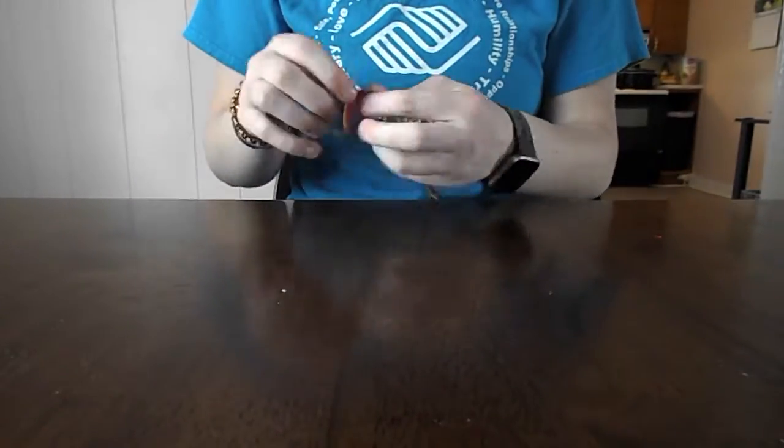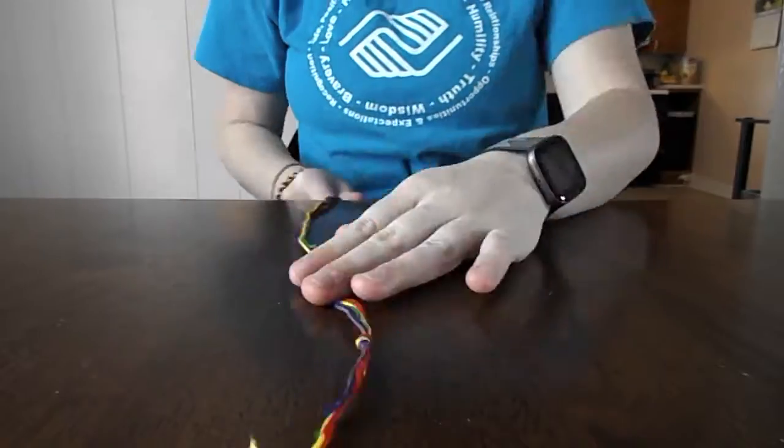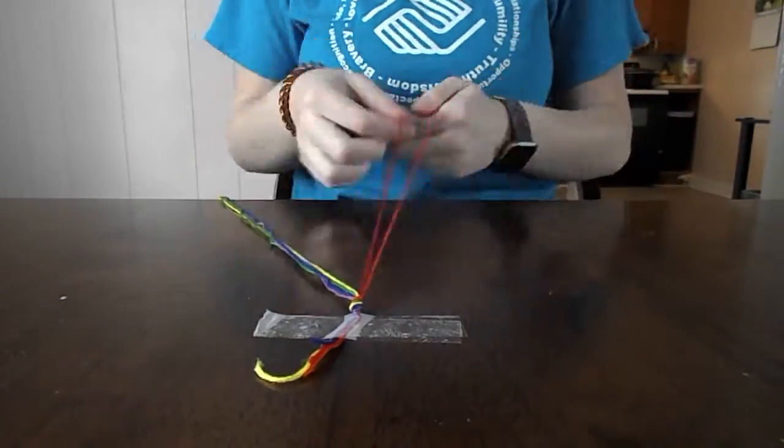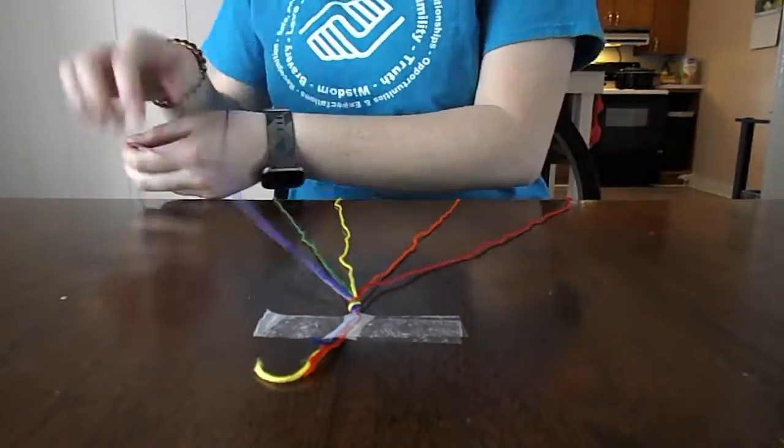The first step is to knot all your colors in the pattern that you choose and then tape it down so it's nice and secure. Then separate your strings so it's all neatly organized.